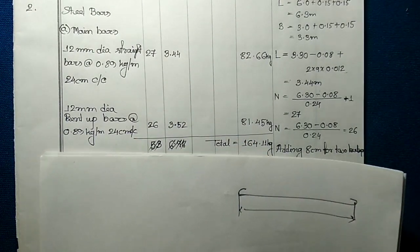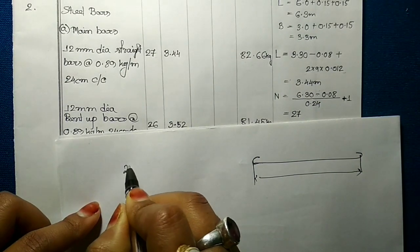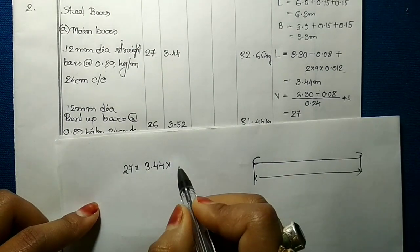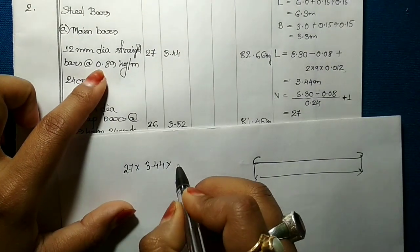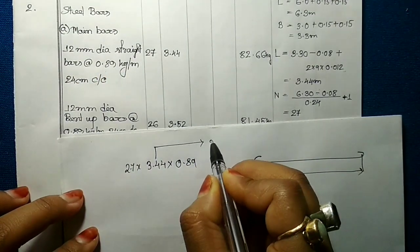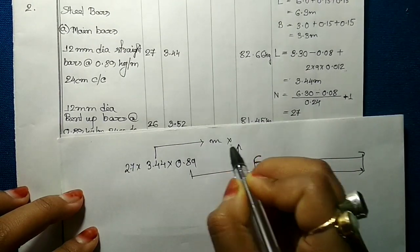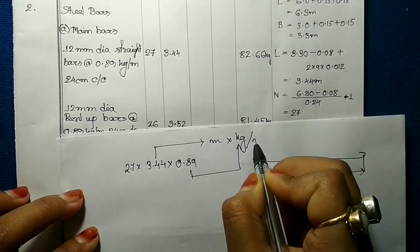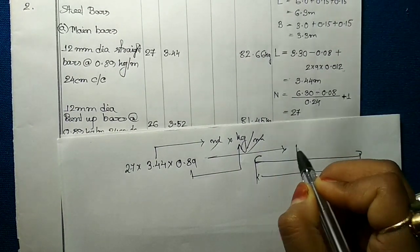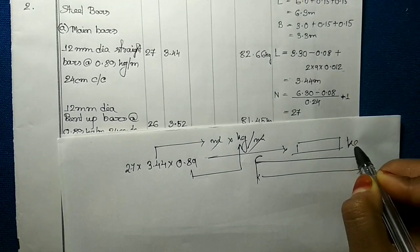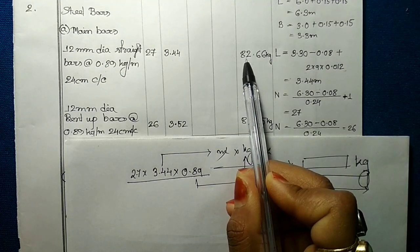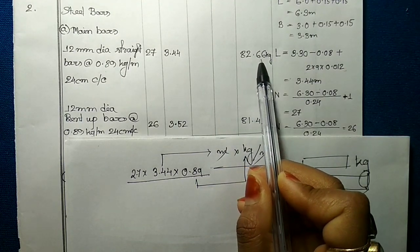We now have the number and the length. The weight per meter run is 0.89 kg/m. Multiplying the number, length, and weight per meter run together, we get the quantity of straight main bars as 82.66 kg.